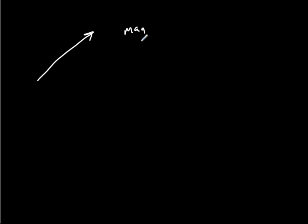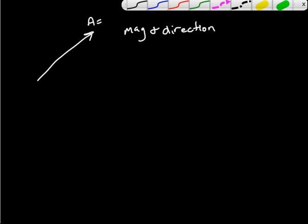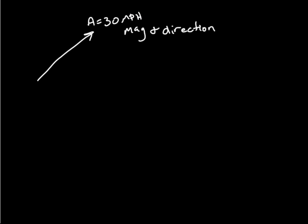Today we're going to go through force vectors very briefly, and we're going to do a couple of practice problems. First, we're just going to go through what a force vector is. A force vector is basically just an arrow — a force with a magnitude and a direction. That magnitude can be labeled in many ways; usually you'll see it as vector A equals, let's say, 30 miles per hour.